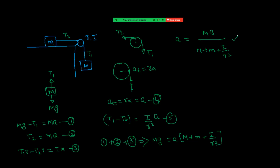Since we are solving this for the first time we wrote all the equations systematically. In fact, we can get this answer directly. Compared to Newton's law of motion where we got Mg/(M+m), the only extra term is I/R², because here tensions are different and produce a torque causing the pulley to rotate.